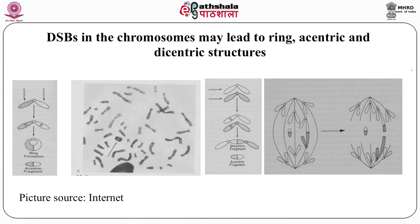Double strand breaks in chromosomes may lead to structural changes such as ring structures, eccentric structures, and dicentric structures of the chromosomes. All these double strand breaks may lead to such chromosomal changes. For your information, a form of radiation dose measurement called biodosimetry uses biological indicators to determine what dose an individual has received. These dicentric chromosome structures correlate with the dose an individual receives and can be used for radiation biodosimetry purposes.